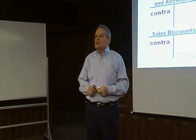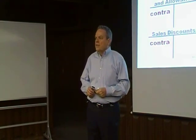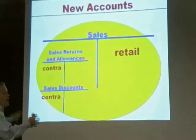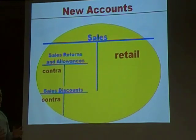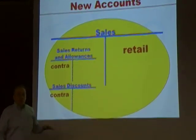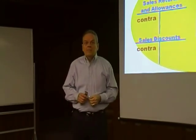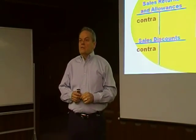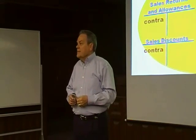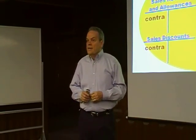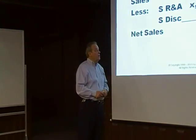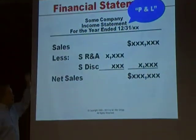If I wanted to know the true amount of revenue earned, I would take sales, subtract sales returns and allowances, subtract sales discounts — and that net number is called net sales. Sales minus sales returns and allowances and sales discounts equals net sales. Here's how it might look on an income statement: a heading, all the revenue earned in the sales account, then the sum of the two contra accounts is subtracted from sales to get net sales.